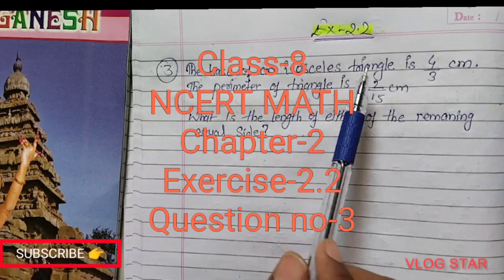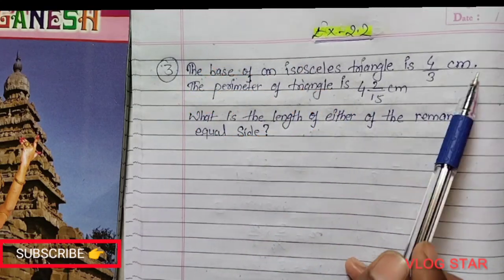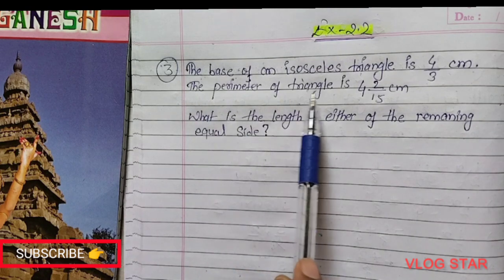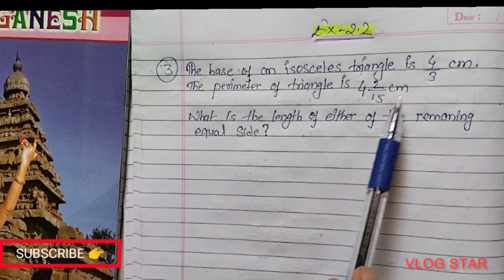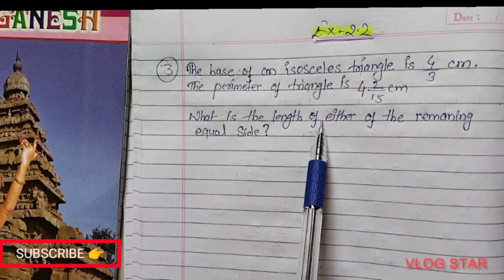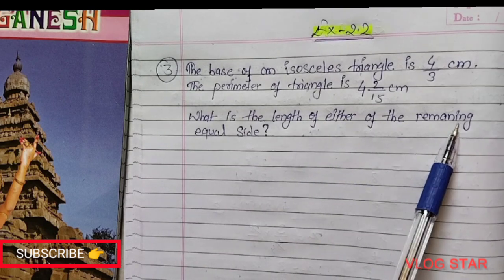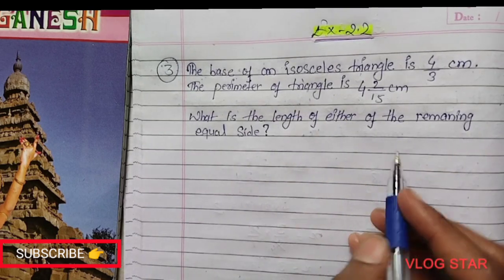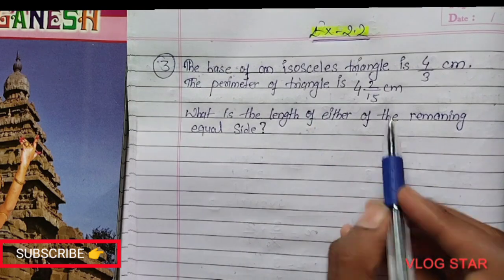The base of an isosceles triangle is 4/3 centimeter. The perimeter of the triangle is 4 and 2/15 centimeter. What is the length of either of the remaining equal sides? In an isosceles triangle...